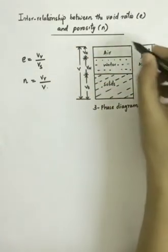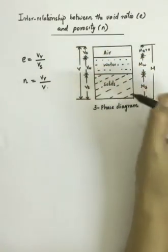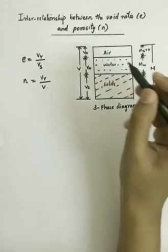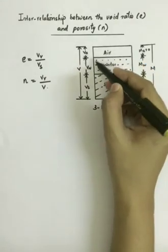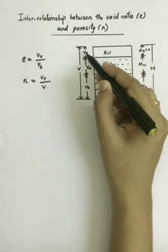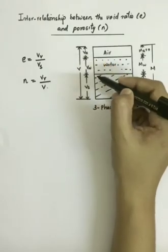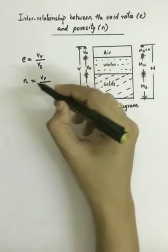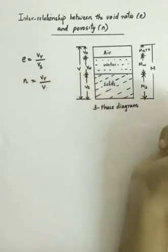So if the soil mass has a volume of capital V and the volume of voids, that is the volume of air plus volume of water, is expressed as VV, then we can write the porosity as VV by V.